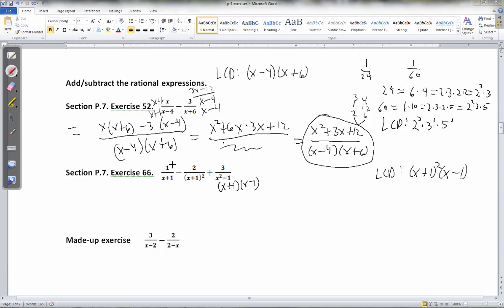That means this one gets multiplied by another x plus 1 and an x minus 1 on top and bottom. You can't really fit it on bottom, so draw little arrows there. This one needs the x minus 1. You can probably fit an x minus 1 down there. And this one needs a single x plus 1 because it already has one of each, an x plus 1 and x minus 1. So that means I have x plus 1 times x minus 1 minus 2 times x minus 1 plus 3 times x plus 1 over my least common denominator of x plus 1 squared times x minus 1.